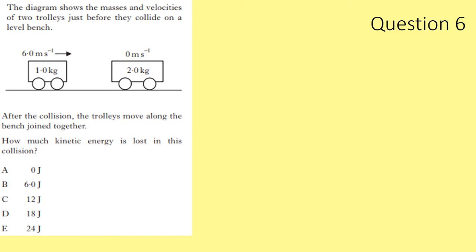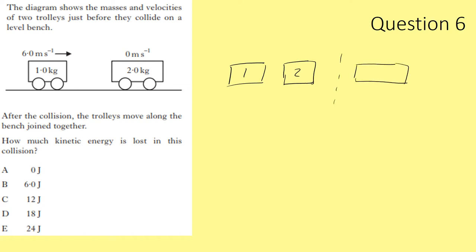Question 6. Two trolleys collide on a level bench and join together. We need to find the kinetic energy lost. Before collision: mass 1 kg at 6 m/s, mass 2 kg at 0 m/s. Using conservation of momentum: 1×6 = 3×V, so V = 2 m/s after collision.